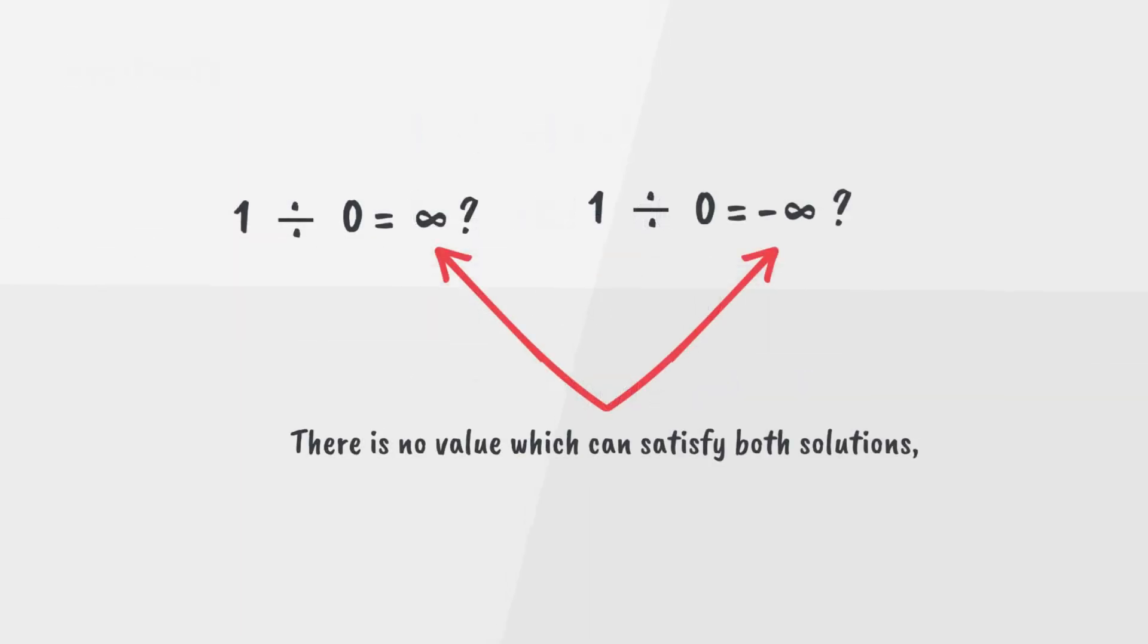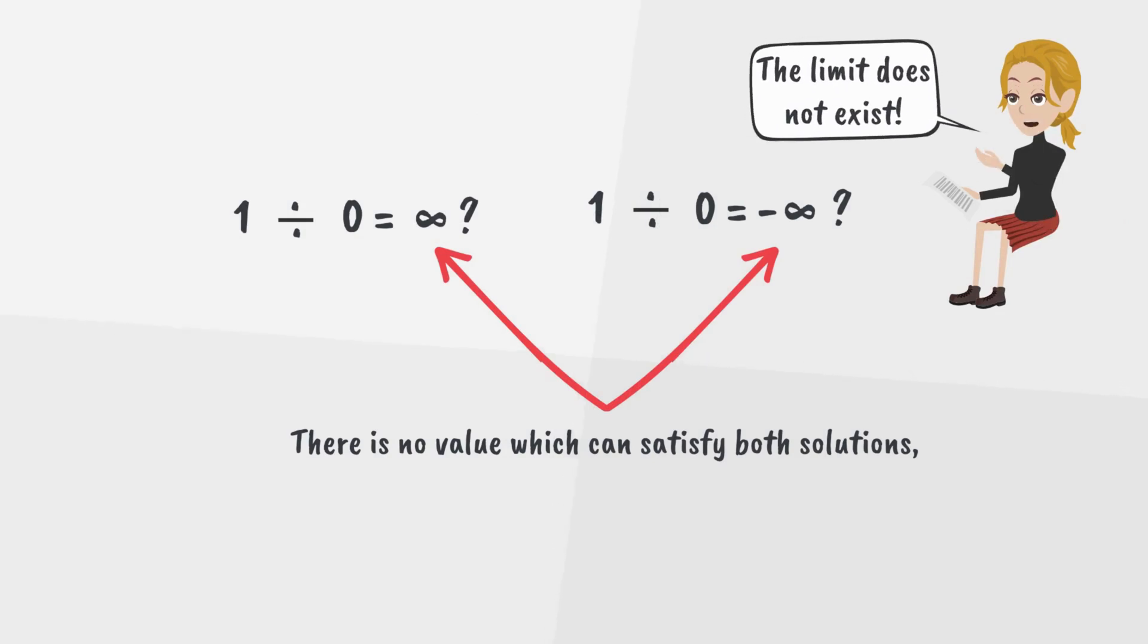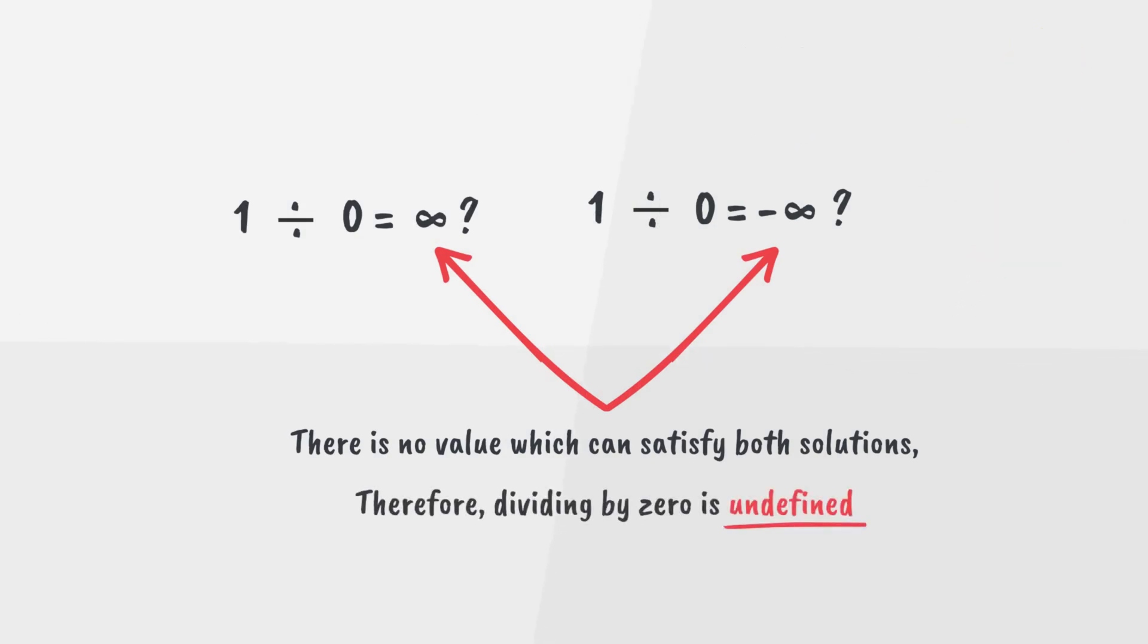We therefore reach a contradiction. There is no value which can satisfy both solutions of positive and negative infinity. Therefore, dividing by zero is undefined.